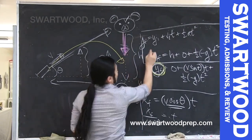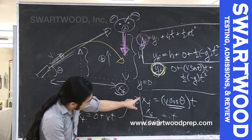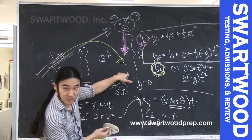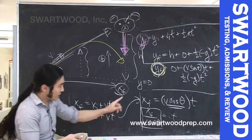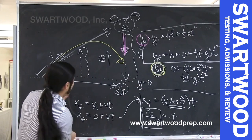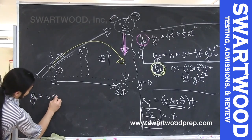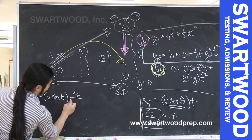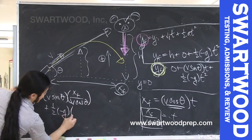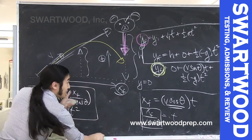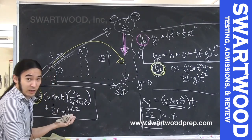Now let's put it all together and see what happens. The time required for the bullet to reach the right-hand side is t = x_final / (v·cosθ). Let's plug that time in for the bullet's y_final. So y_final equals v·sinθ times (x_final / (v·cosθ)) plus ½·(−g)·t². That's what's going to happen for the bullet — or the projectile — whatever you want to call it.